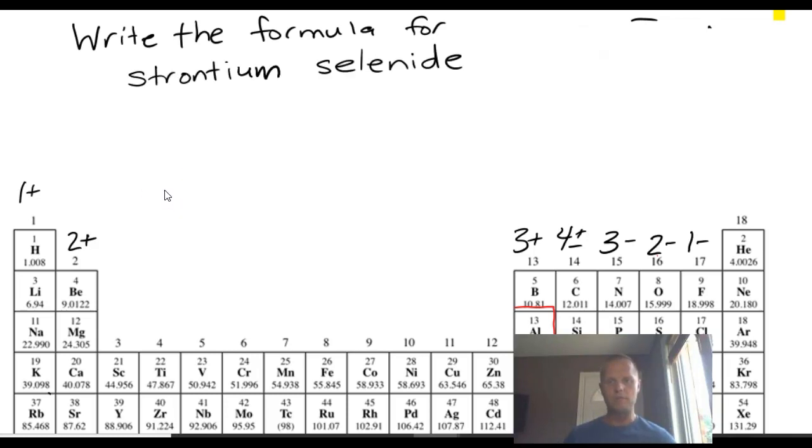Write the formula for strontium selenide. I'm trying to answer the correct answer looking at the periodic table. If you did it correctly, you would see that strontium is in group 2, and you'd see selenide is in group 6A or group 16. These are the charges that each one is going to be using. 2 plus 2 negative. We write down the element symbol, Sr. Strontium has a 2 plus charge. Selenium has a 2 negative charge.